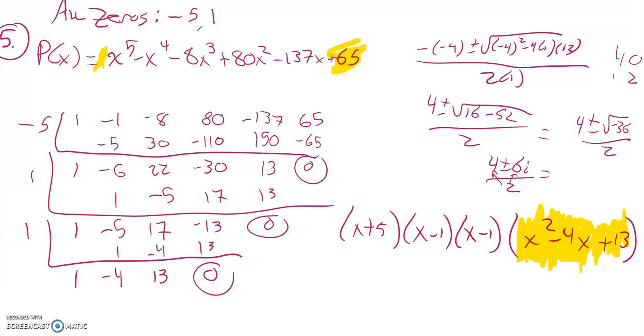So there's my other two zeros. I have one, two of them here, and then two more. One being - and you can write it in this compacted form 2 ± 3i, or you can write it out to show that they're separate. It doesn't really matter; I tend to leave it compacted. But there's my zeros for that polynomial.